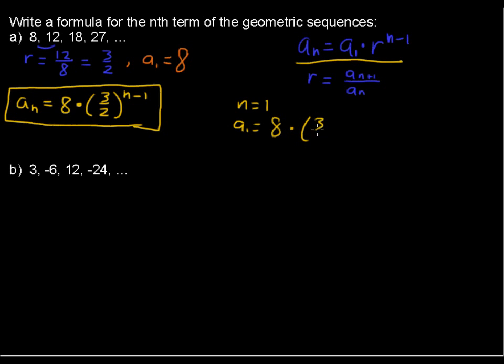8 times this 3 halves raised to the 1 minus 1, because I'm plugging the 1 in for n there. And yeah, that's 8 times 3 halves to the 0 power, which equals 8 times 1 equals 8. And that checks out good. That's what we're looking for. So that's why we have the n minus 1.